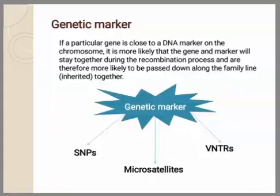Modern genetic mapping is done through genetic markers. In this case, the location of a gene is predicted with respect to the known position of DNA markers. If the gene and the marker stay together after recombination, they are located close to each other on the chromosome and will be inherited together. These markers are extremely valuable for tracking inheritance of characteristics or diseases through several generations of a family. These markers could be variable number of tandem repeat polymorphisms, micro-satellite polymorphisms, or single nucleotide polymorphisms.